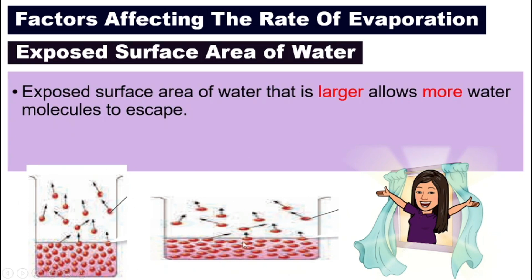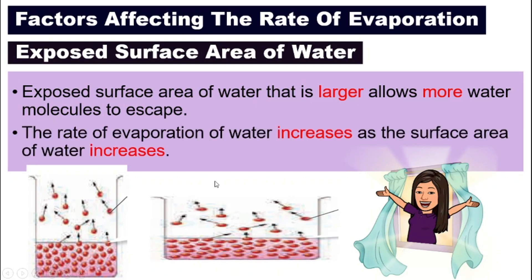The second container, the one in the middle, will dry faster. Because the exposed surface area of water is bigger. When this exposed surface area is bigger and wider and larger, more water molecules can escape into the air, and hence the rate of evaporation of water will increase if the surface area of water also increases.